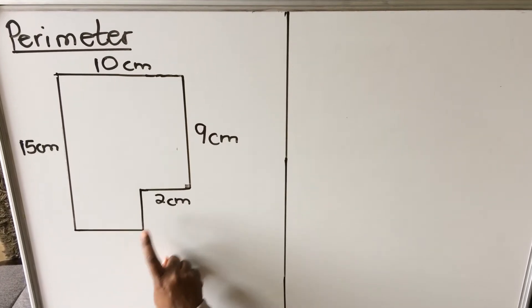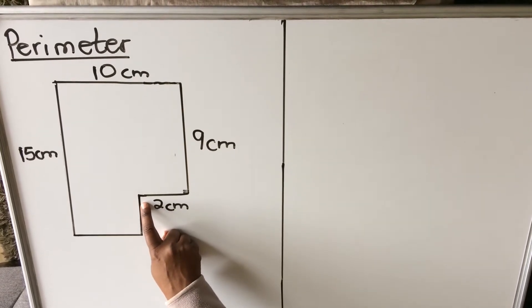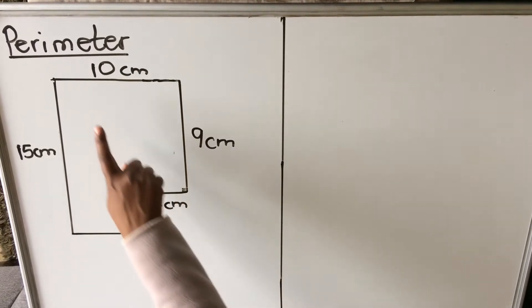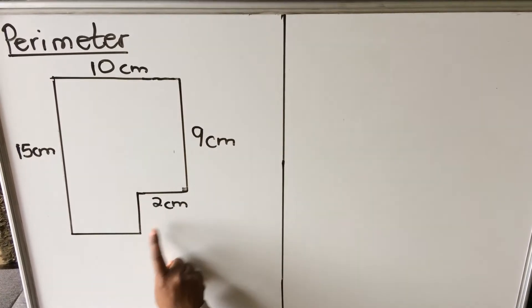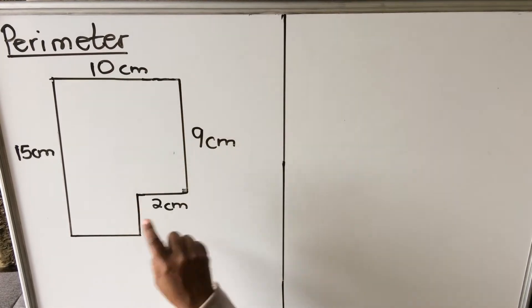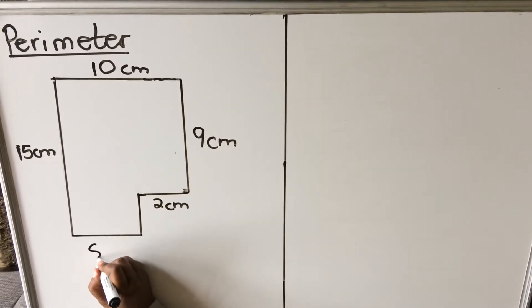We need to calculate that first, and here we also don't have a value, so we need to calculate that. Here this side is 10, so this side is 2, which means 2 plus what will be equal to 10, because this side and that side are equal. So here it's 8 centimeters.